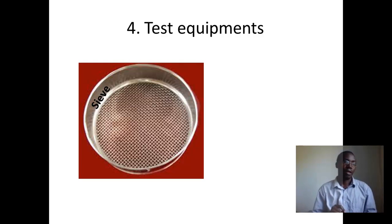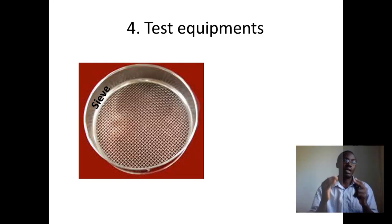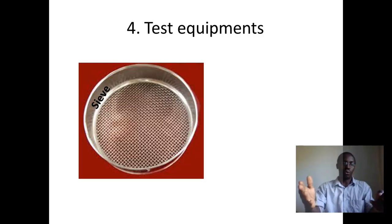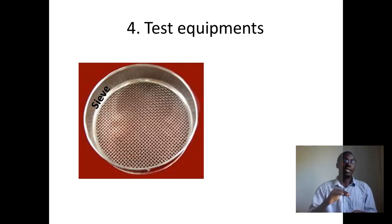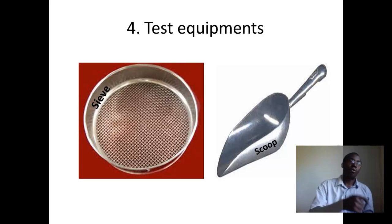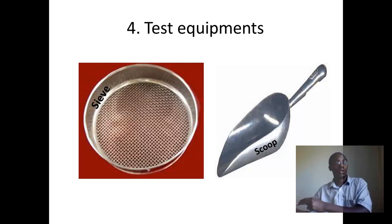Test equipment: the sieve is the main piece of equipment used in the sieve analysis test. It has holes or apertures which allow sand particles smaller than the holes to go through, and those larger than the holes to be retained on the sieve. The scoop is used to pick sand particles from one point to another.